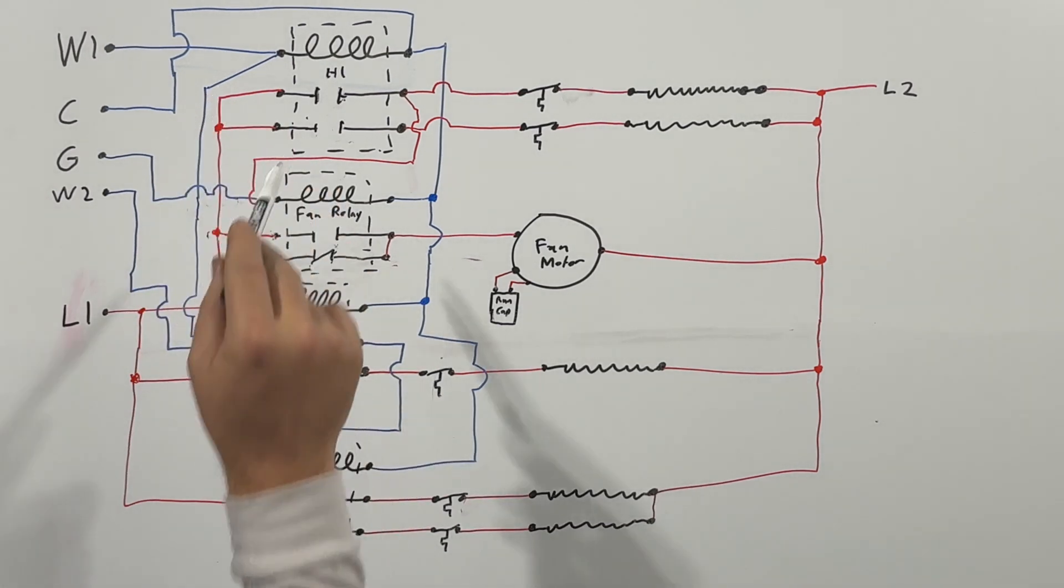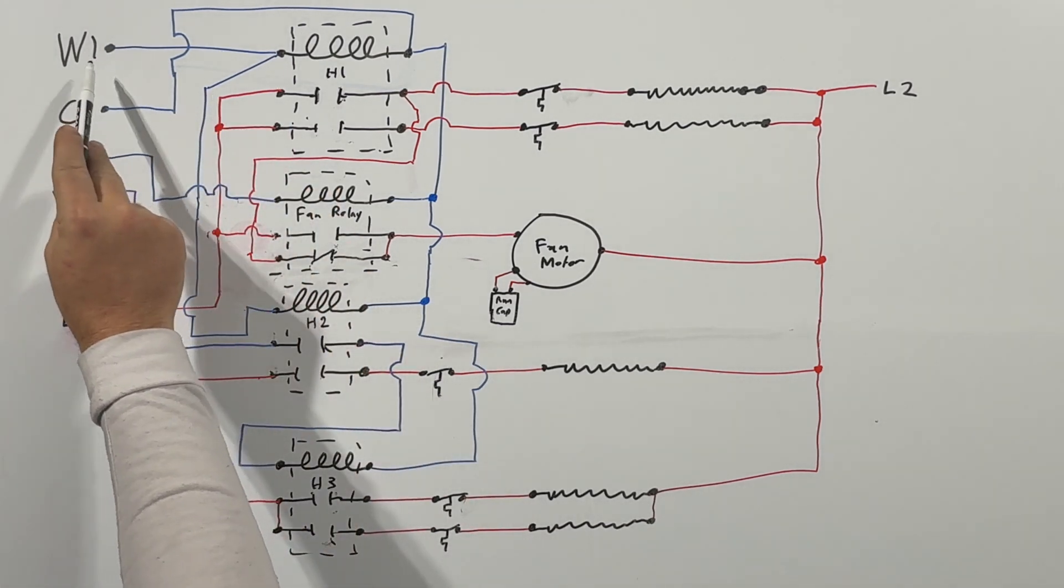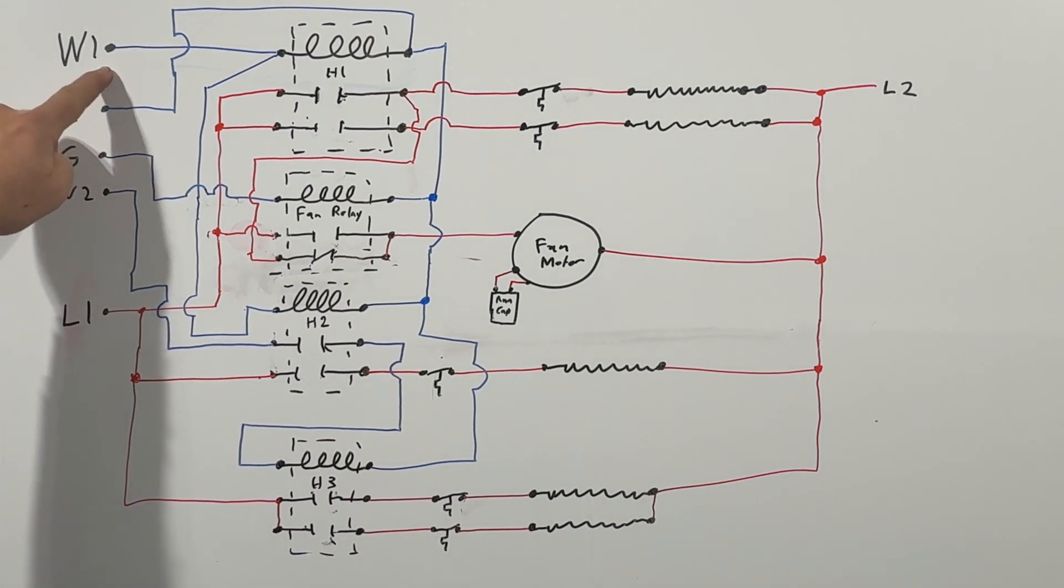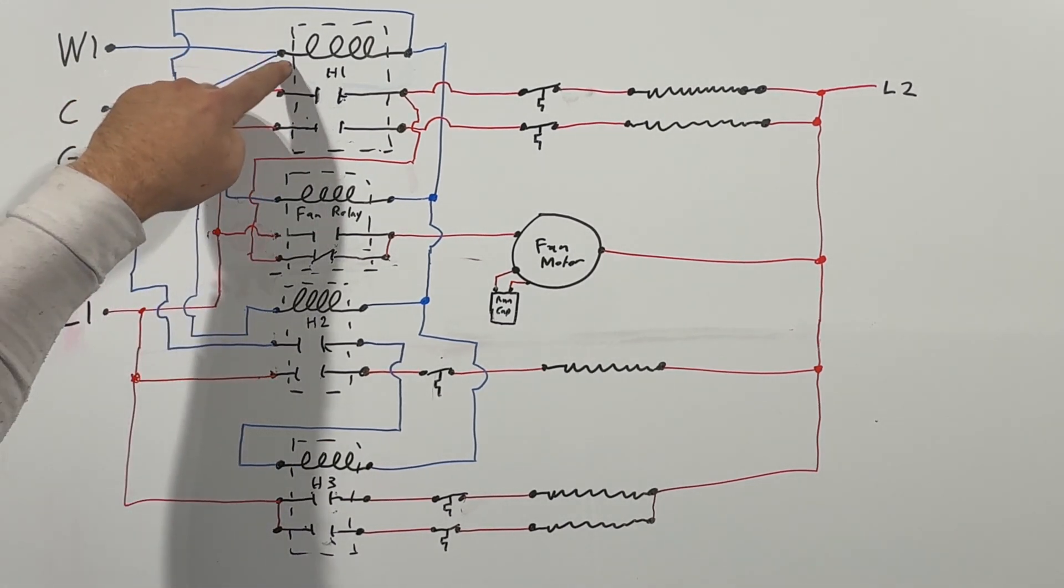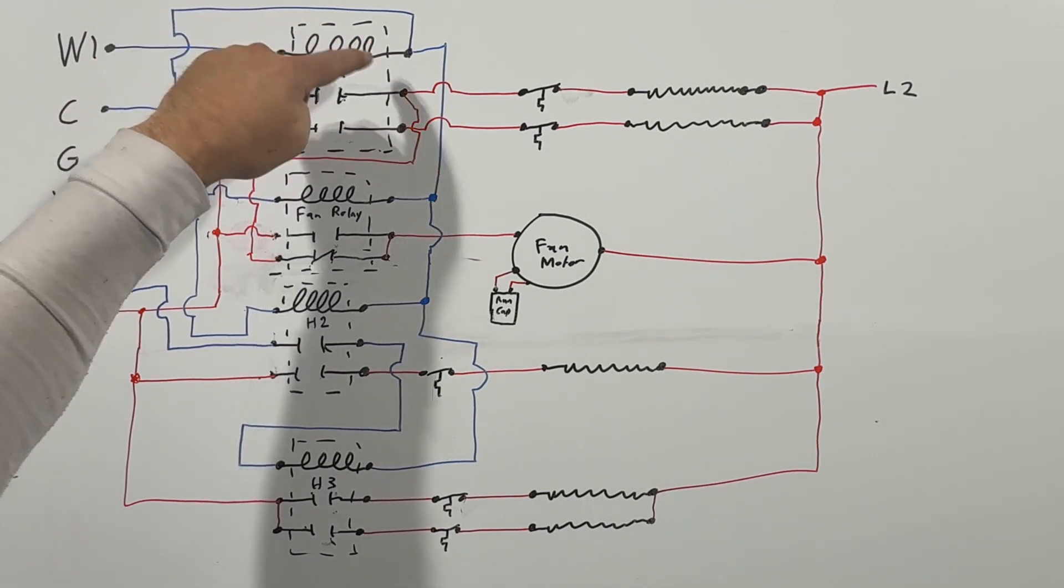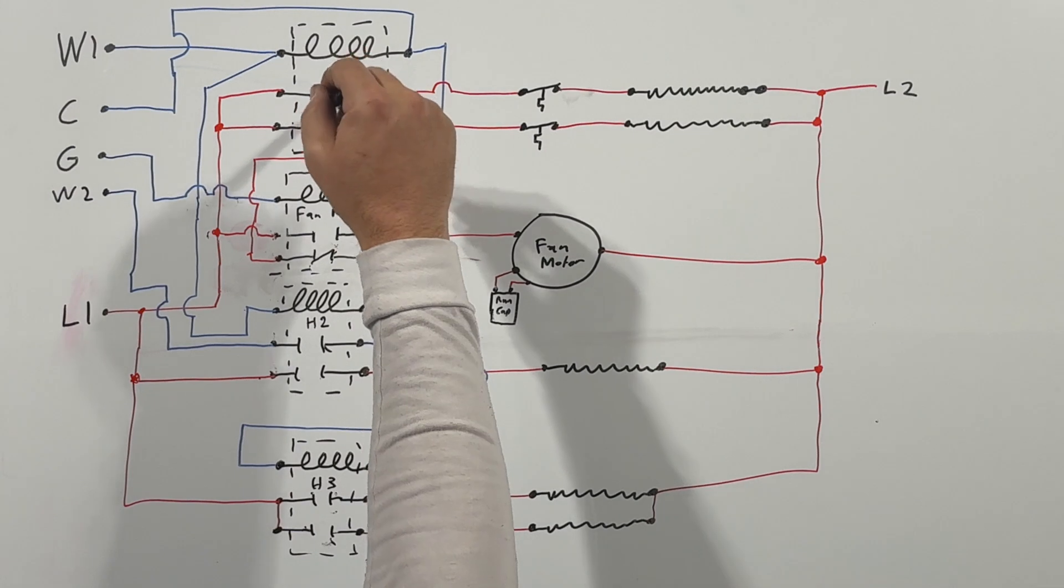Anyway, so if we're calling for heat, we're going to energize 24 volts to W1, right? So we're going to have W1 having 24 volts, which is going to travel into our heating element or our coil in this case, and it's going to warm that thing up.